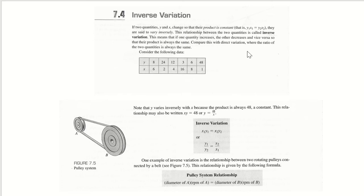This relationship between the two quantities is called inverse variation. This means that if one quantity increases the other decreases and vice versa so that their product is always the same.